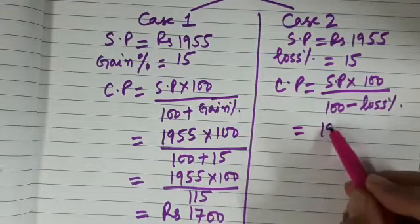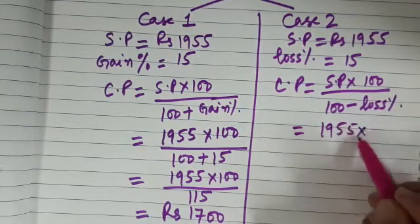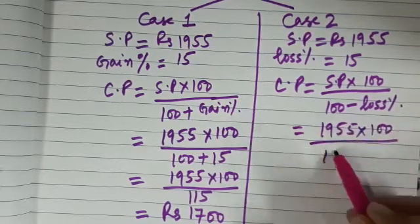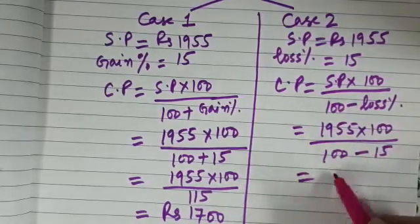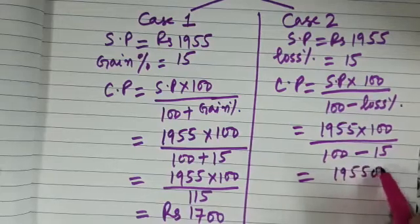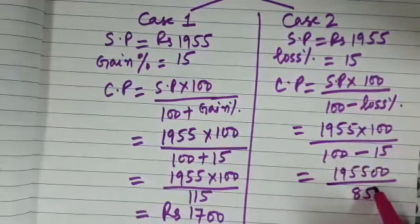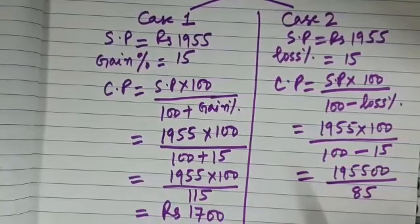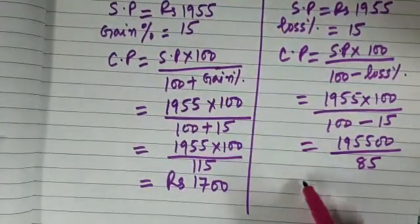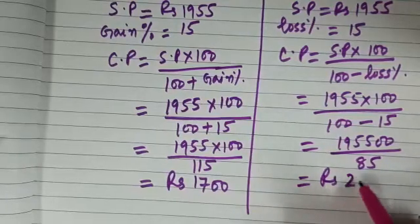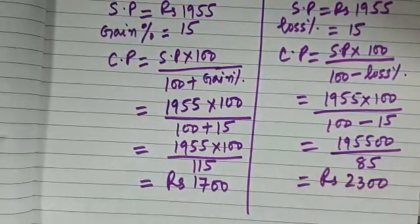We will be using this formula. Let us see what is CP in this case: 1955 into 100 upon 100 minus 15, so that gives us 195500 upon 85. Simplify this and tell me what is the answer. I am getting rupees 2300. Have you got it?